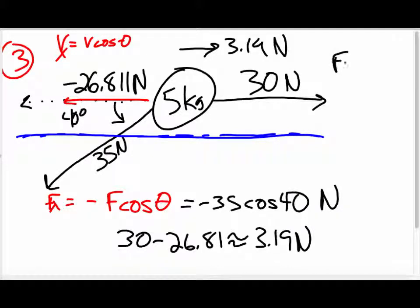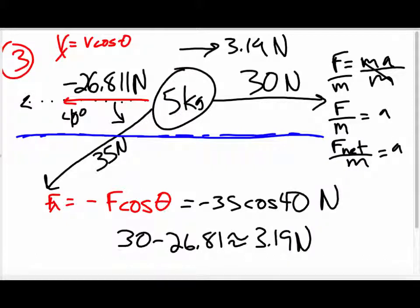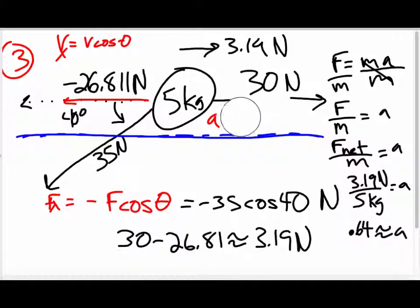Well, remembering that the force is equal to the mass times the acceleration, and since I'm being asked to find the acceleration, I see that the force divided by the mass of the object is equal to the acceleration. I know that the net force divided by the mass is equal to the acceleration. So my net force is 3.19 divided by 5. So it's 3.19 newtons divided by 5 kilograms. About 0.64. Yeah, roughly. It's about 0.64, positive 0.64. So the acceleration is about 0.64 meters per second squared in the positive direction.